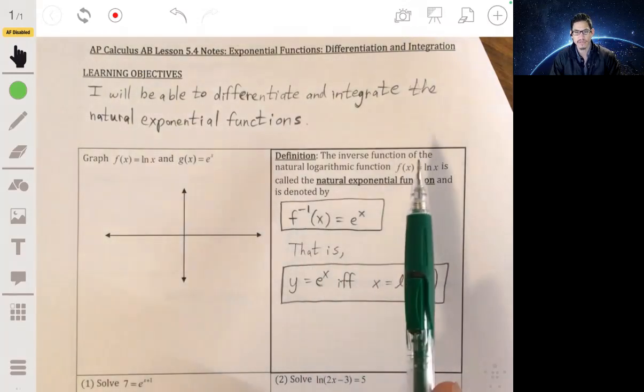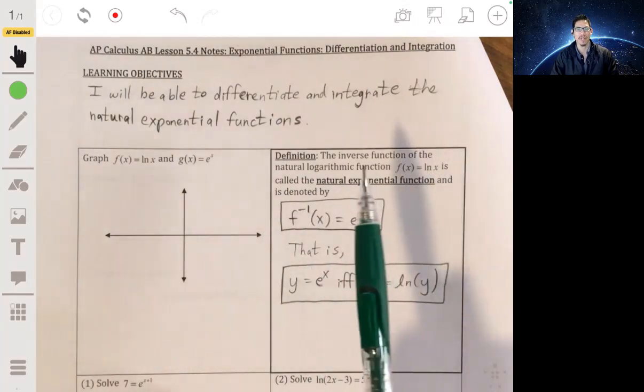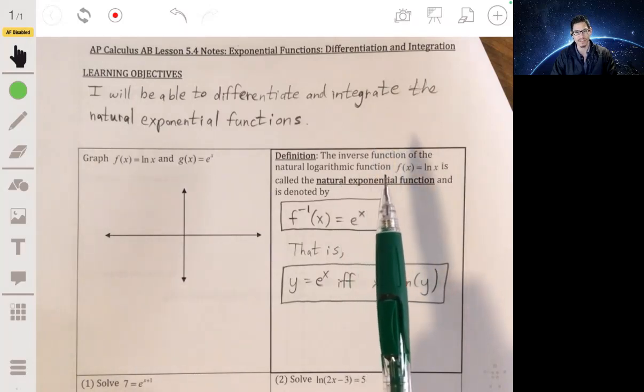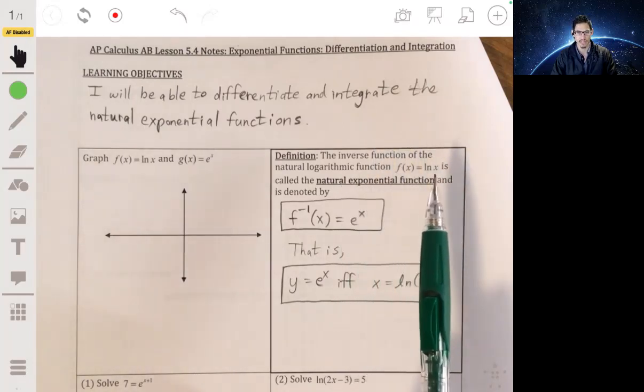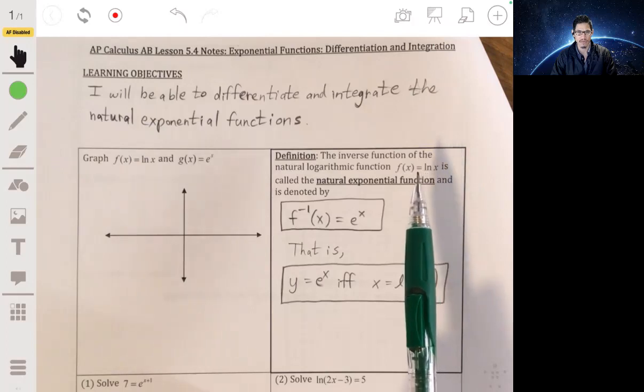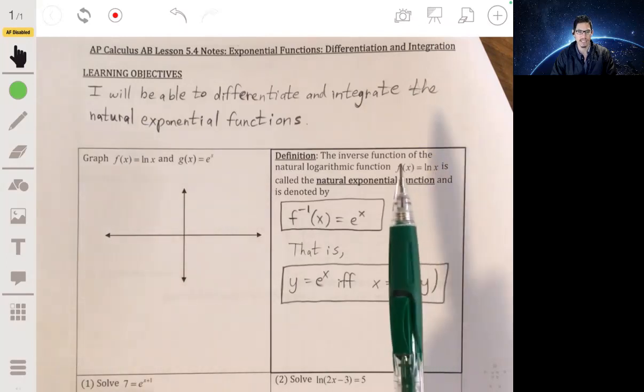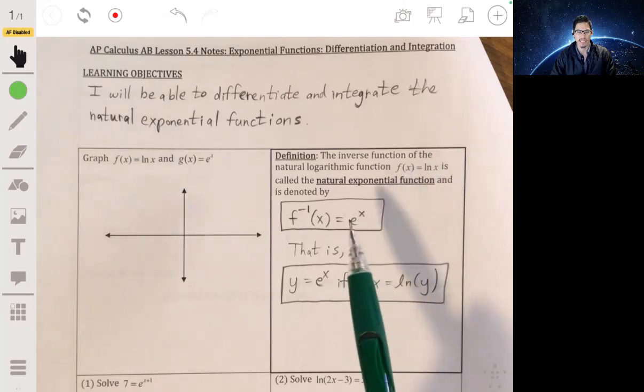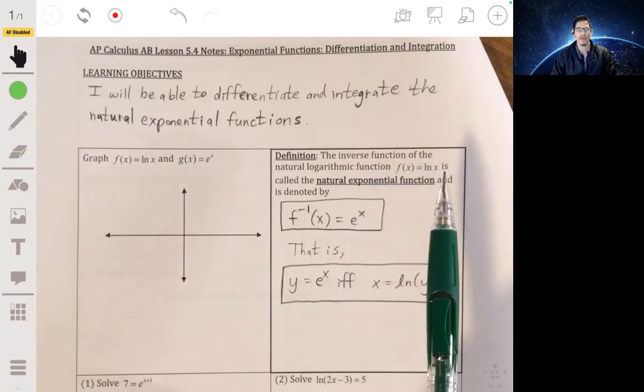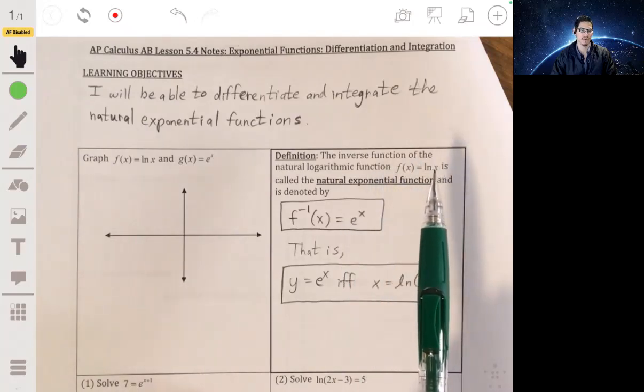So the inverse function, by definition of the natural log function, f of x equals the natural log of x. So if f of x is equal to the natural log of x, then its inverse function is going to be e to the x. So e to the x, by definition, is the inverse of the natural log of x function.